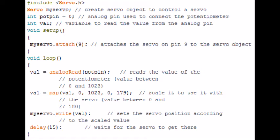Then in the loop, we are saying that val, which we declared earlier as an integer variable, is equal to analogRead potpin. Potpin is zero and it's reading how much electricity is going into A0, which is what the potentiometer is attached to. And then it's basically making a scale: val equals map val zero 1023 zero 179. It's a scale to use within the servo value which is between zero and 180. And then it's writing to the servo: myservo.write val, so it sets the position of the servo according to the scaled value.